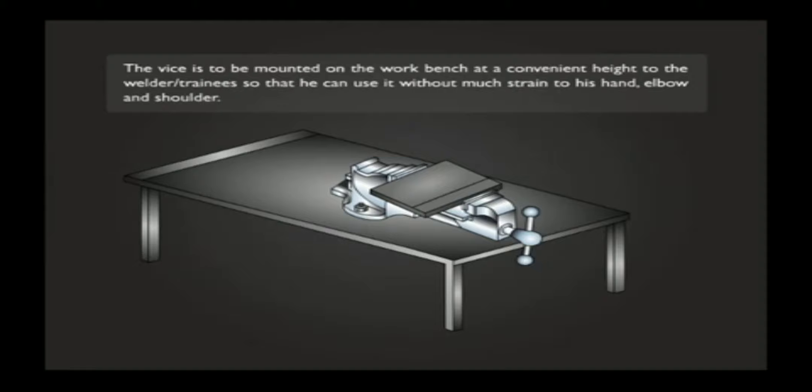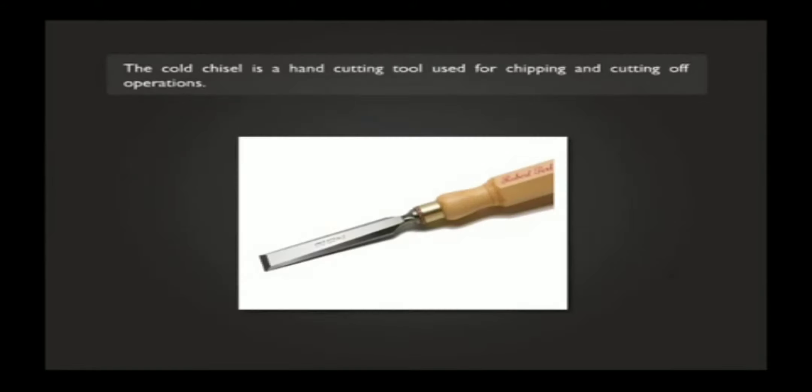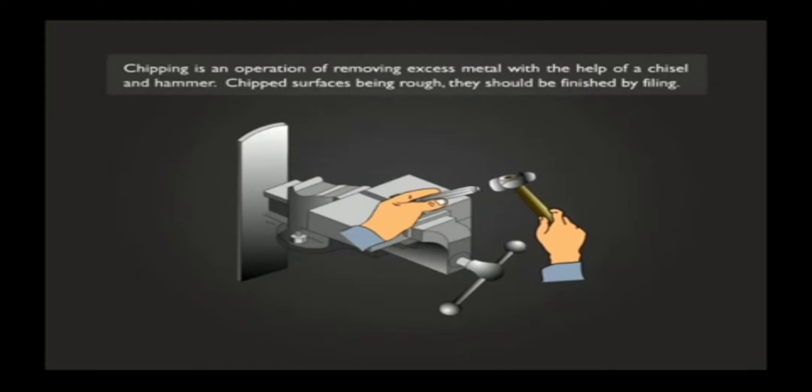The cold chisel is a hand cutting tool used for chipping and cutting off operations. Chipping is an operation of removing excess metal with the help of a chisel and hammer. Chipped surfaces being rough, they should be finished by filing.